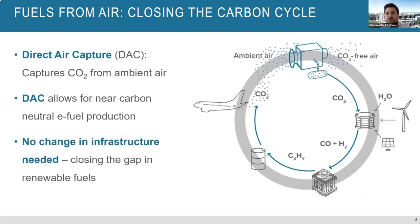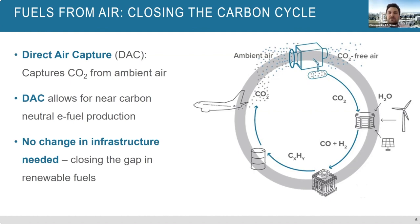With direct air capture, you can basically do two things. First is the mitigation part — getting rid of emissions: electrifying transport and so on. But some technologies we currently don't know how to decarbonize directly, for example aviation. We can decarbonize them indirectly by making fuels from atmospheric CO2 and renewable energy. When you burn the fuel, the CO2 is emitted back into the atmosphere, making it near carbon neutral. You still have some residual emissions within the process that you then have to offset by negative emissions.